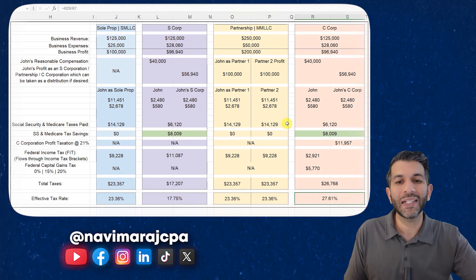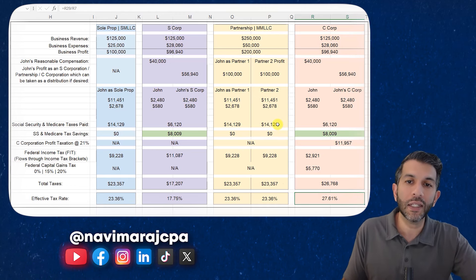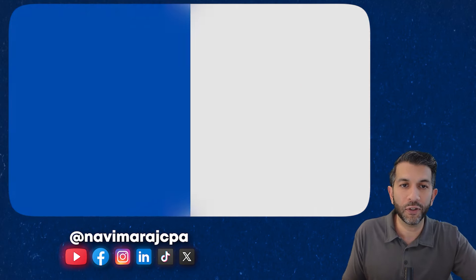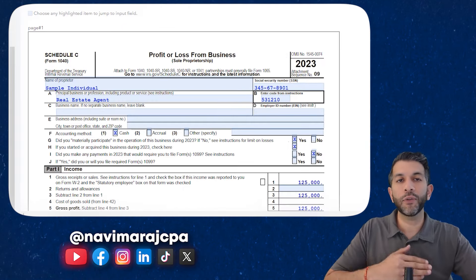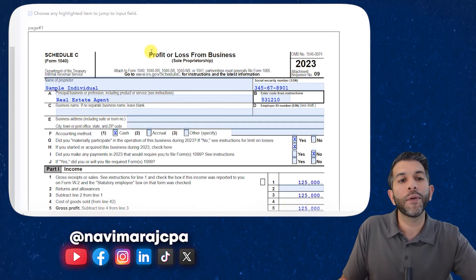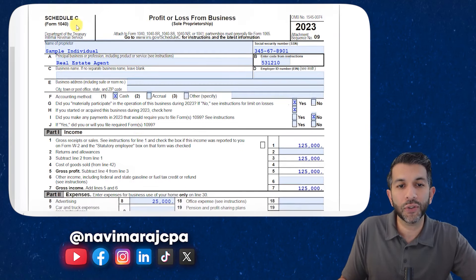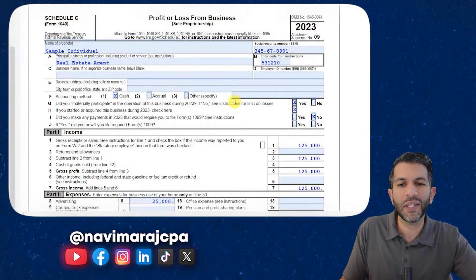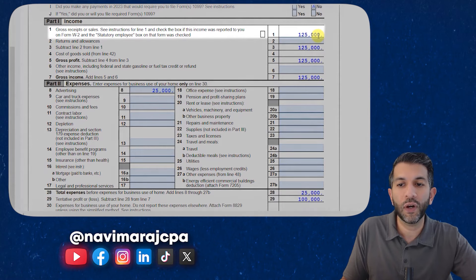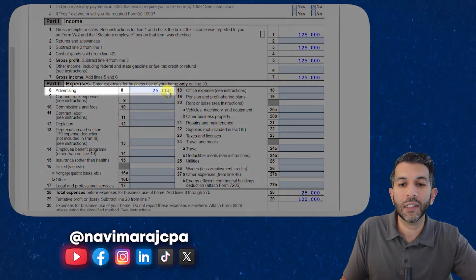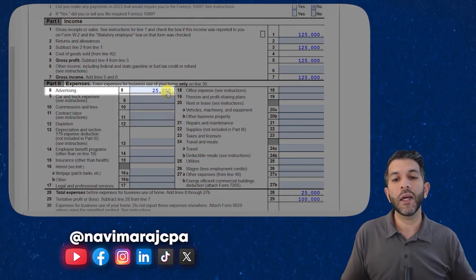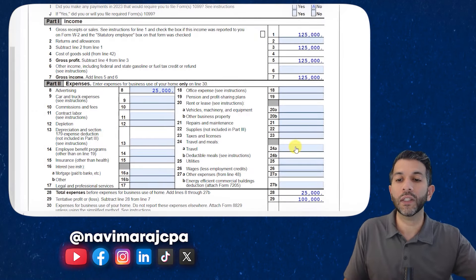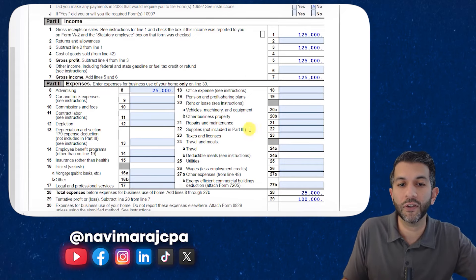Let's go through the actual tax forms one by one. With the sole proprietorship, you're going to complete Schedule C. Schedule C is part of your individual tax return — you can see 'Form 1040' in parentheses, telling you it's part of Form 1040. At the top, we have $125,000 in revenue and $25,000 in advertising expenses. In reality you'll have many different expenses, but I'm keeping it simple with just the one line item.